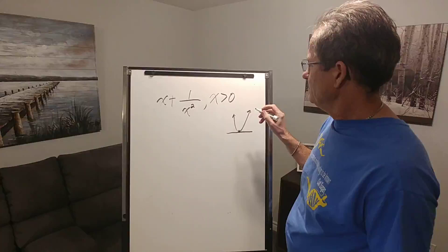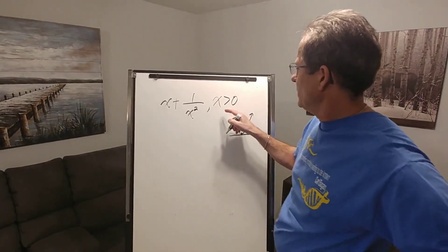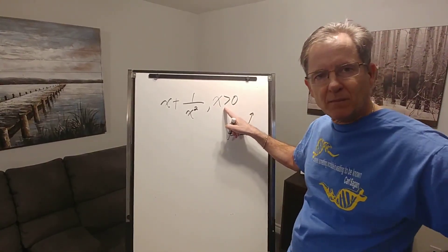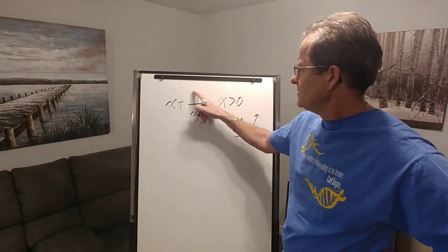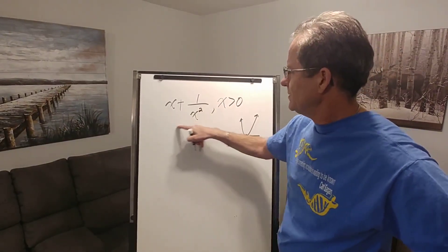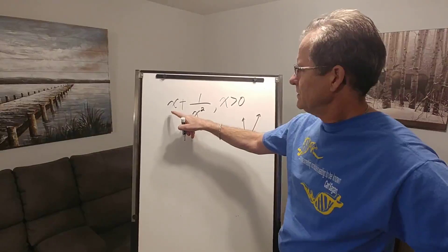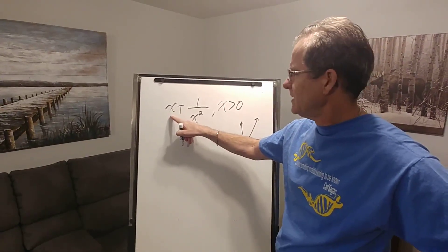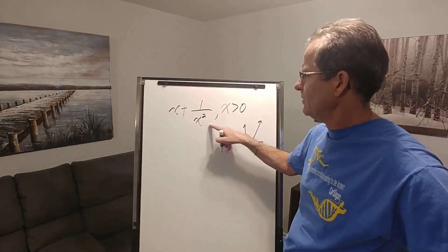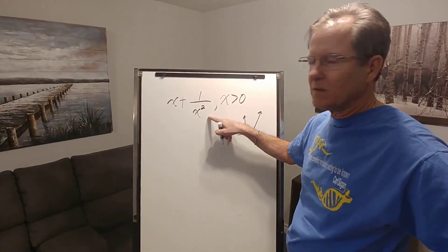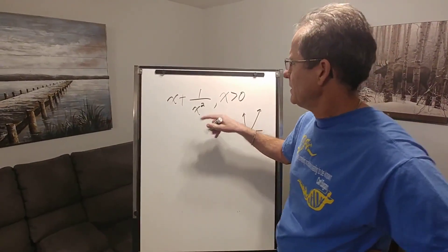But before we do that, I find this very curious that they say it's a positive number because this is always positive. So for this quantity to be a minimum, don't you think that should be a negative value? If that's negative it'll lower the value of the whole expression. So keep that in the back of your minds as we calculate this.